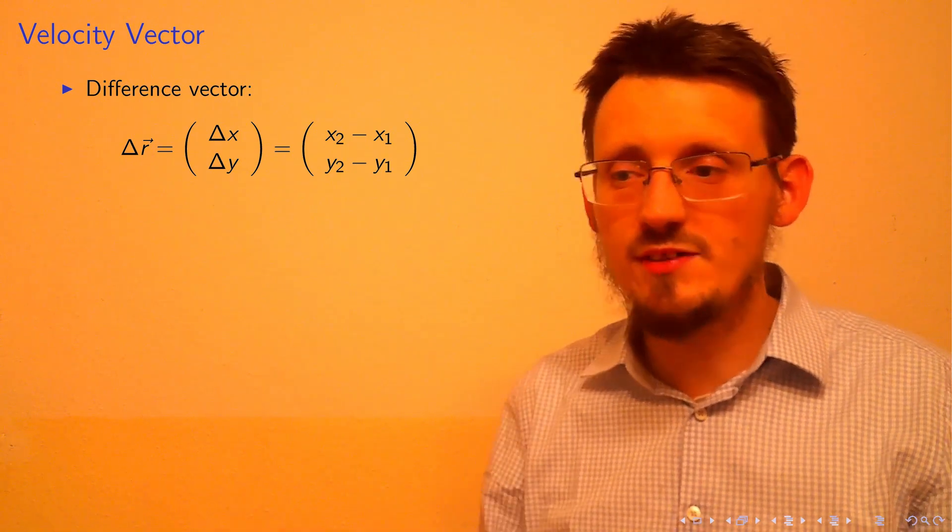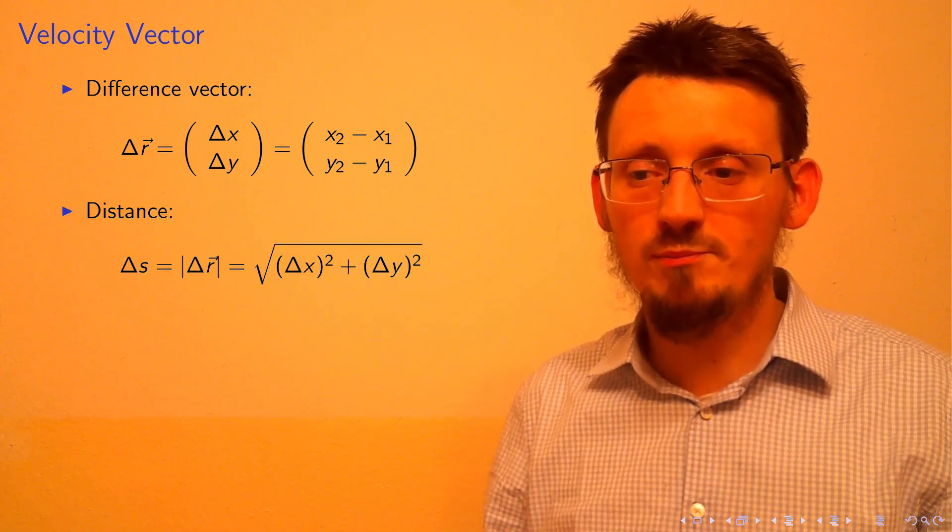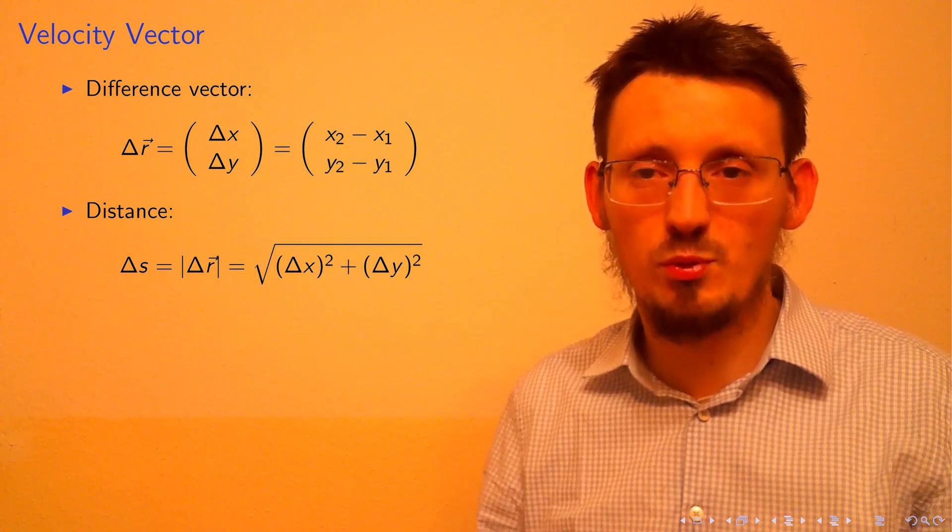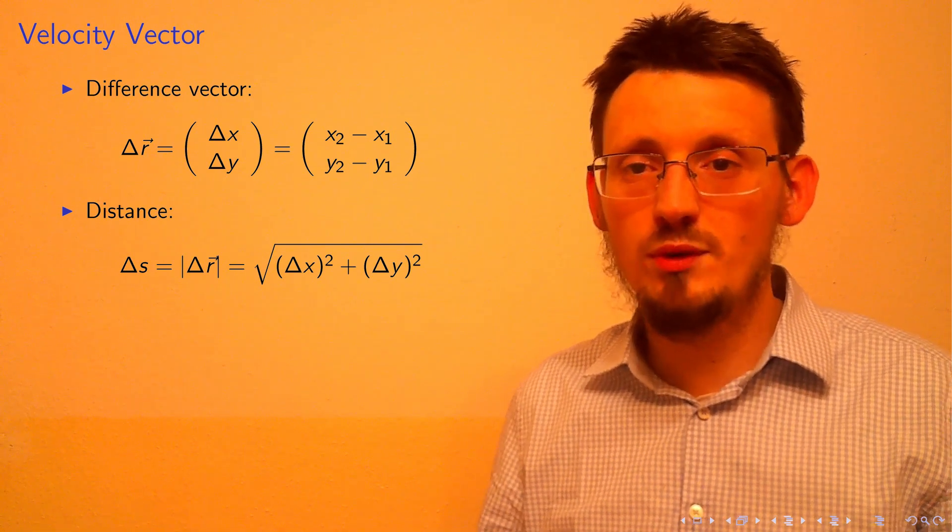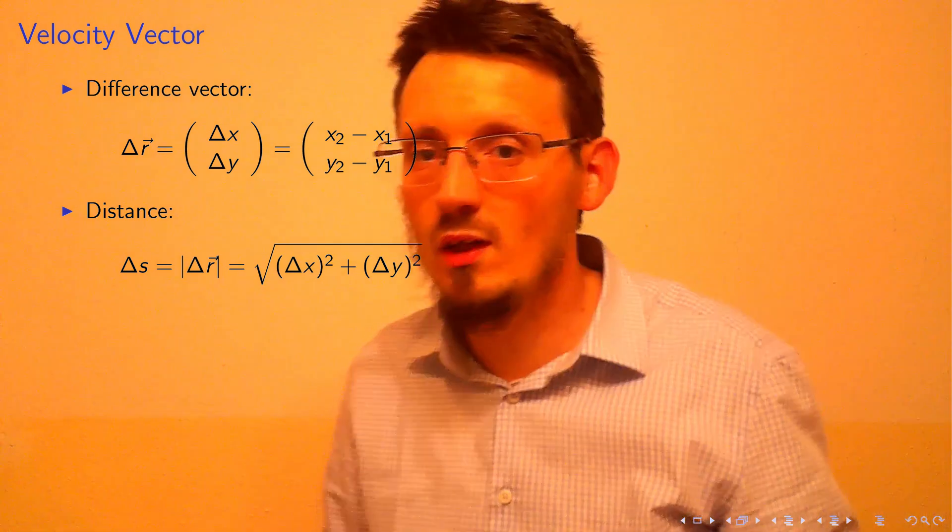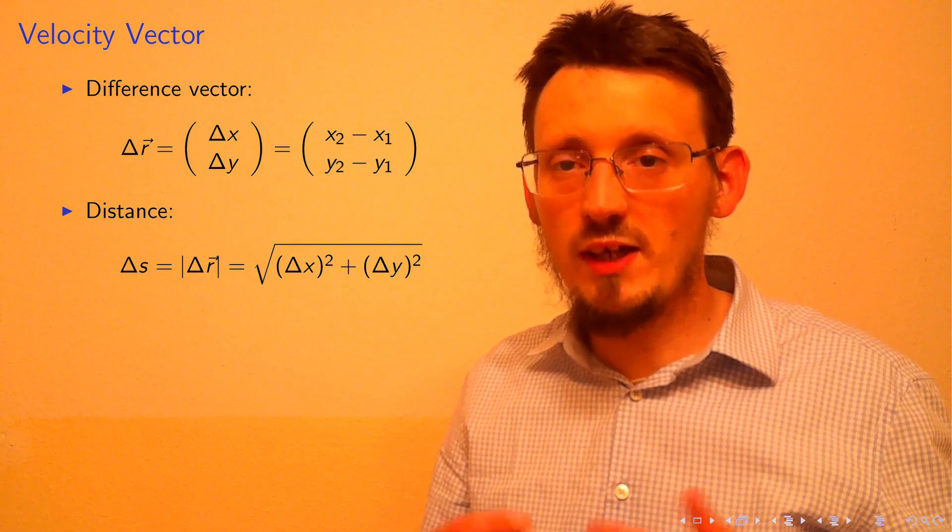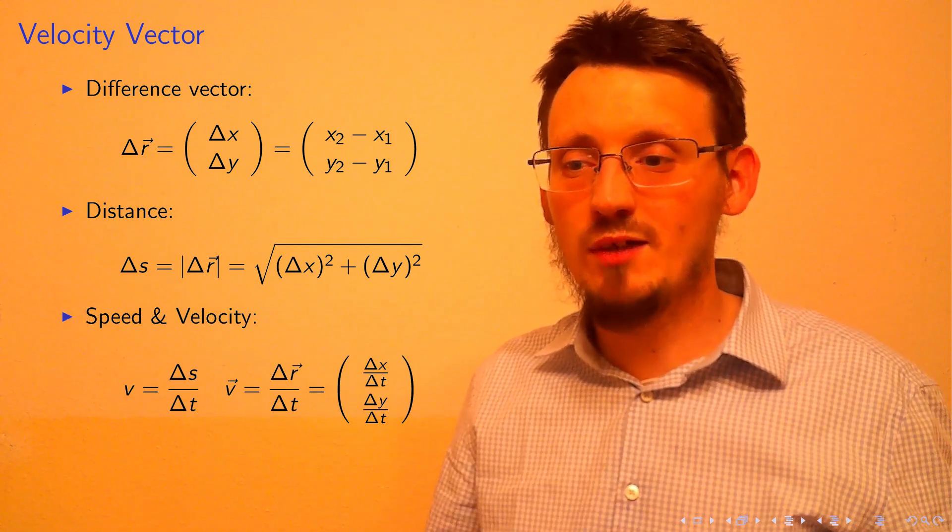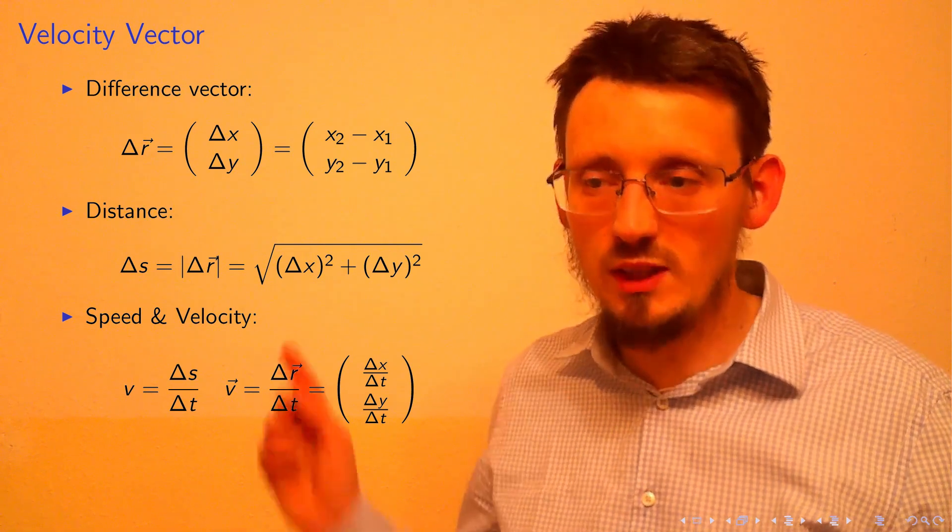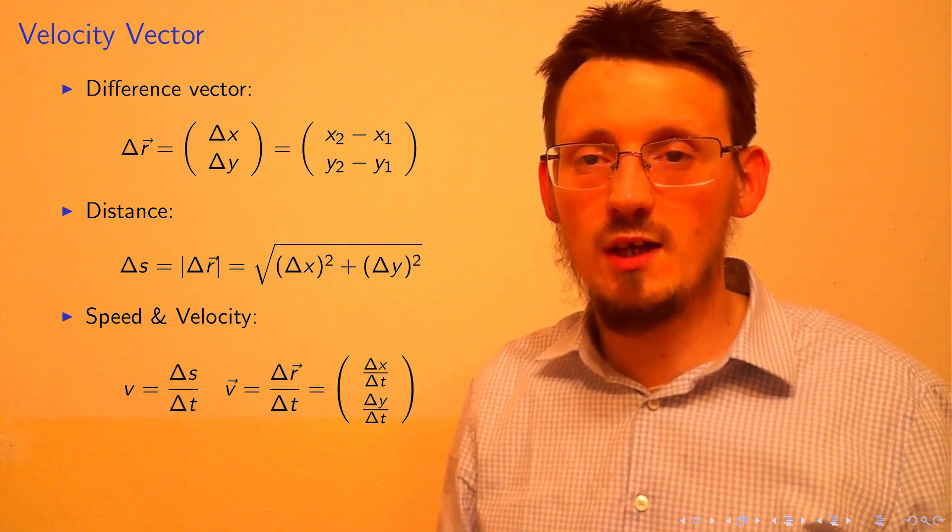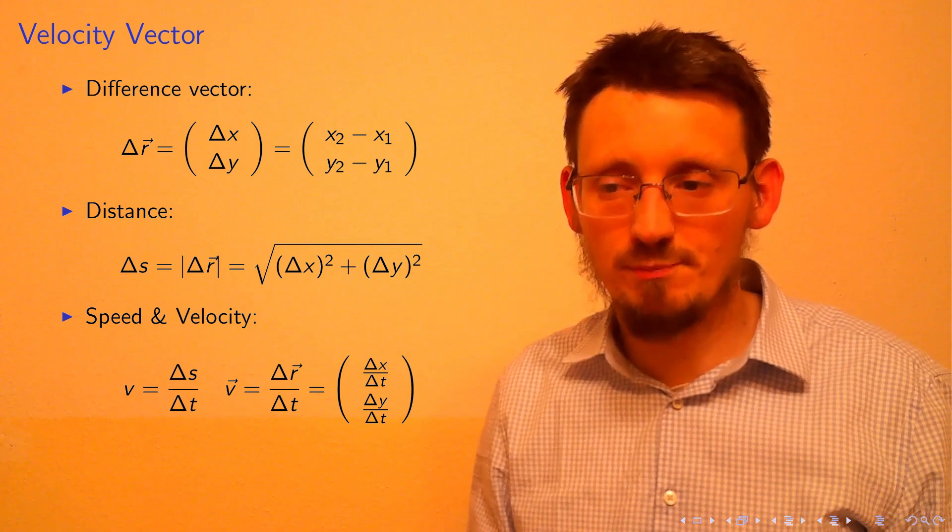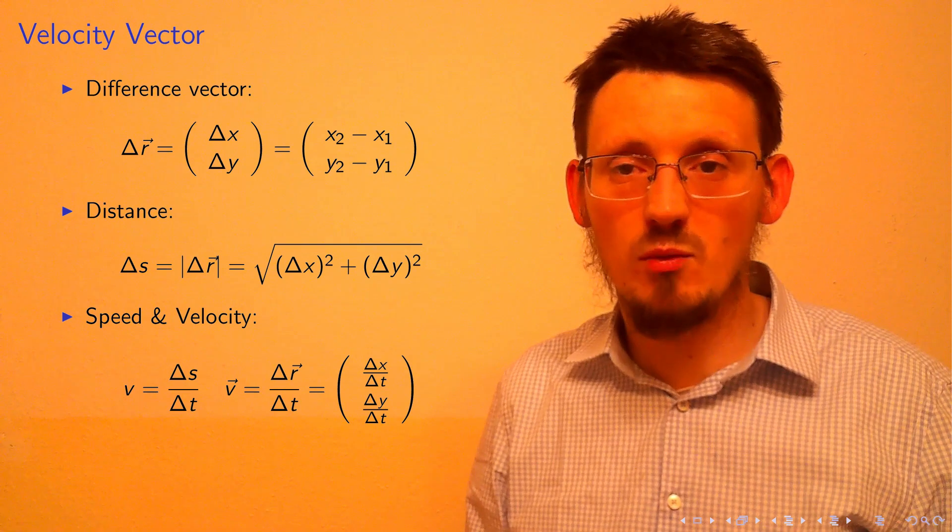The absolute value delta s is given by the Pythagorean theorem as the square root of delta x squared plus delta y squared. To compute the absolute value of velocity, divide delta s by delta t. To calculate the velocity vector, divide the distance vector delta r by delta t, so v equals delta r over delta t with components delta x over delta t and delta y over delta t.